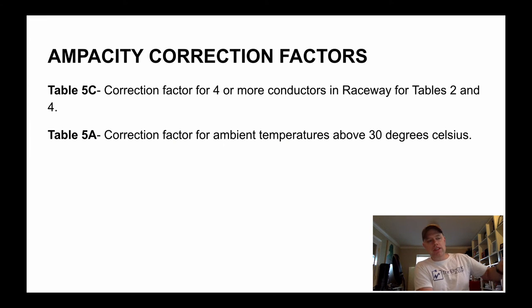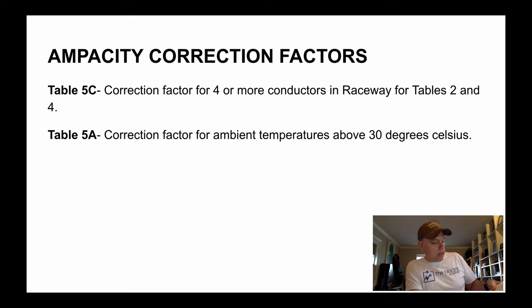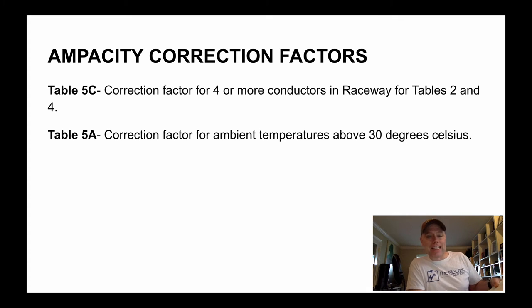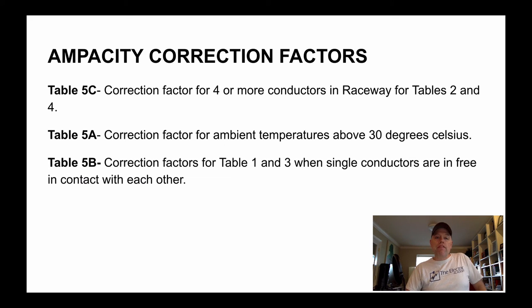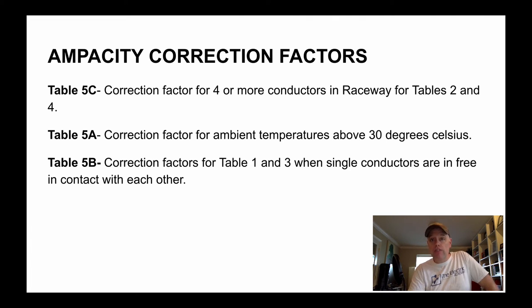Table 5A is referred to in 4-004 subrule 7, item B, item I, and it covers ampacity correction factors where conductors are installed in an ambient temperature exceeding or anticipated to exceed 30°C. Table 5B covers correction factors for tables 1 and 3, where single conductors are in free air and in contact with each other. I don't go over table 5B in the examples because I've rarely used it in real life — if you have, please leave a comment below.